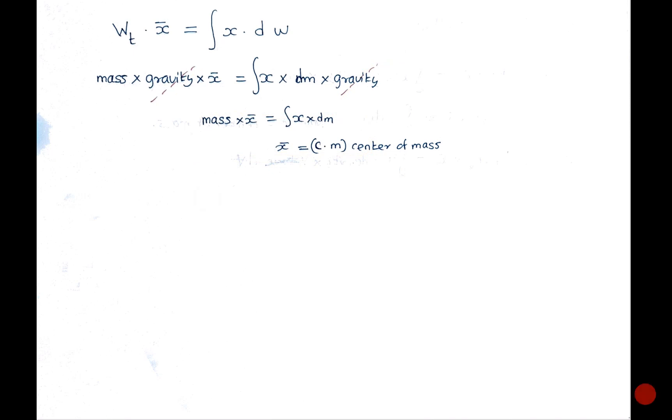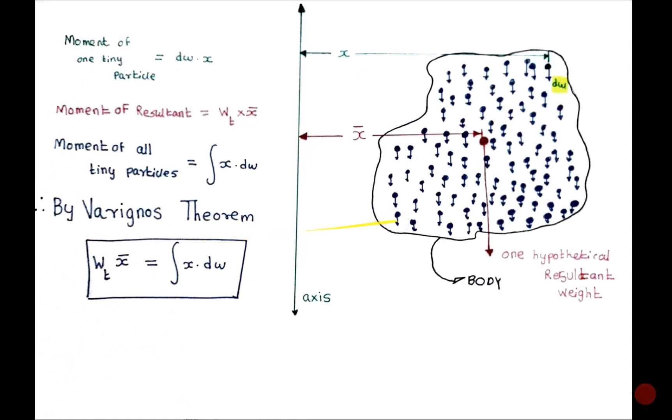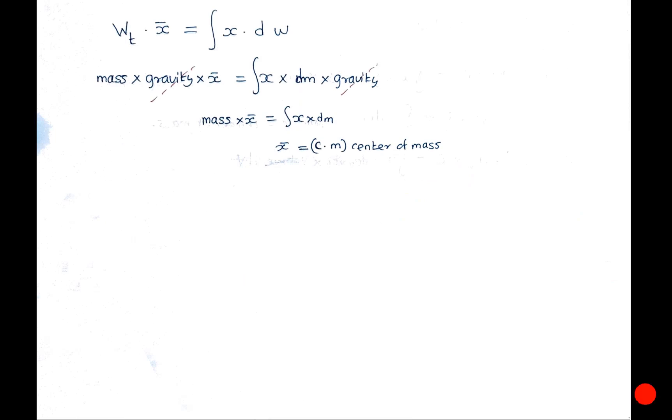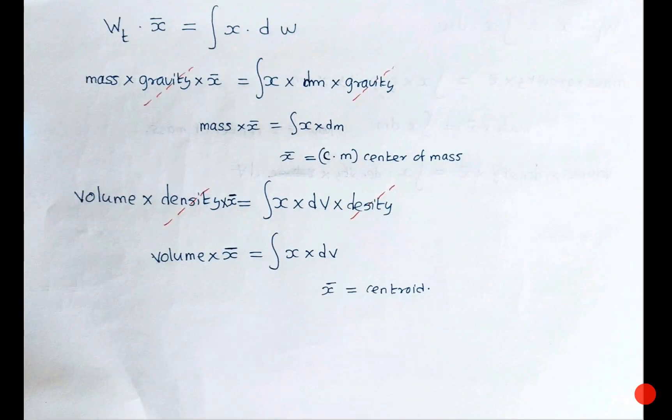And I would like to tell you that the center of mass and center of gravity are one and the same thing, and they both are the same point. Further, mass can be written as volume into density, and this density can be cancelled. And we write this equation for locating the centroid.